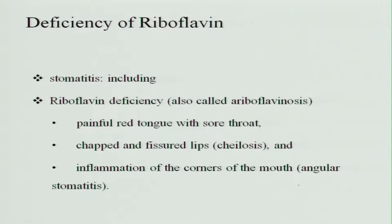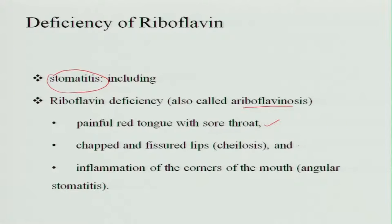Deficiency of riboflavin causes stomatitis, also called ariboflavinosis, meaning there is no riboflavin in the diet. This causes a painful red tongue, sore throat, chapped lips with fissures called chelosis, and inflammation of the corners of the mouth called angular stomatitis. You can find scars in the corners of the lips.